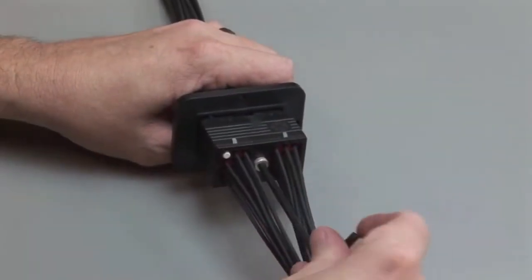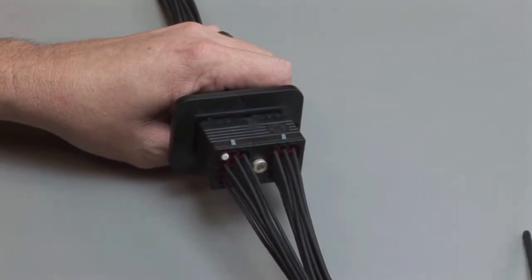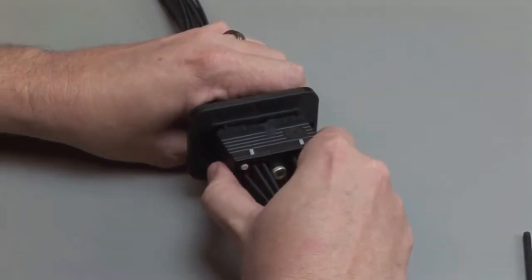To unmate the DRC series connectors, loosen the jackscrew and pull the plug and receptacle apart.